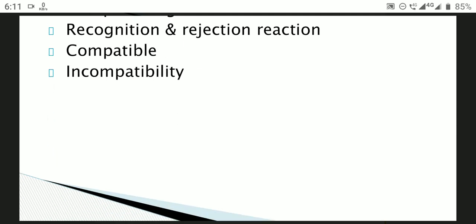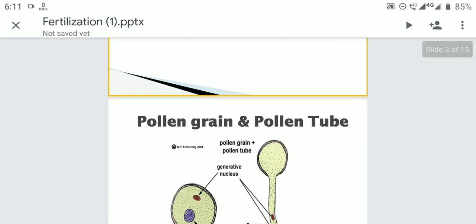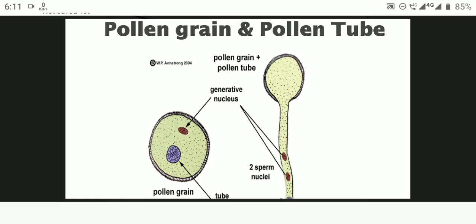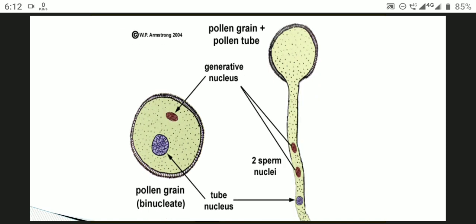What is the structure of a pollen grain? The pollen grain is a binucleate pollen grain. It has an outer exine wall layer and an inner intine. The tube nucleus and the generative nucleus are present inside — this is the binucleate pollen grain.